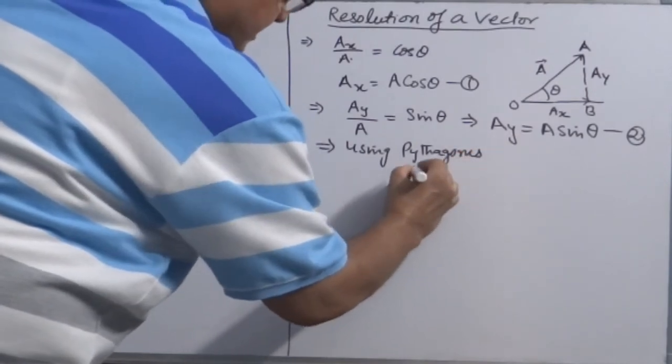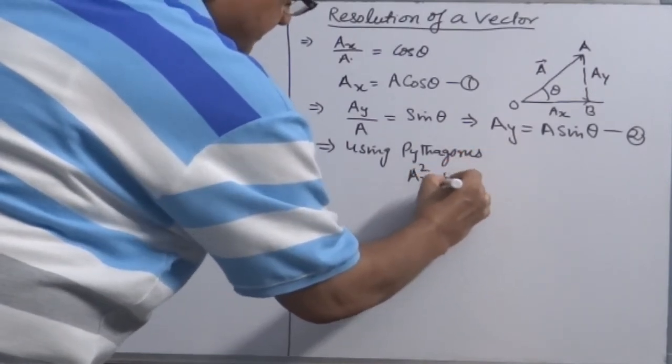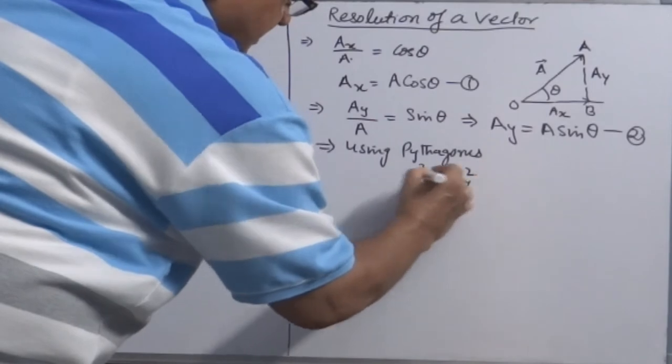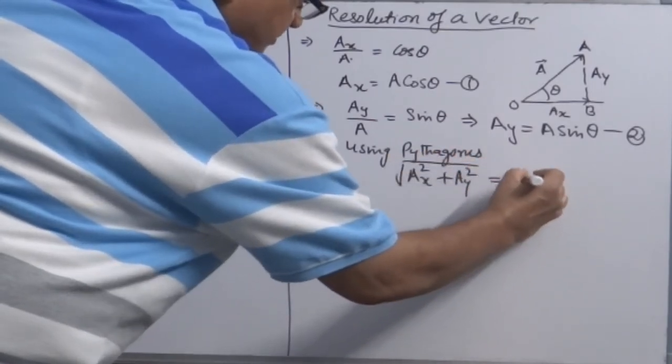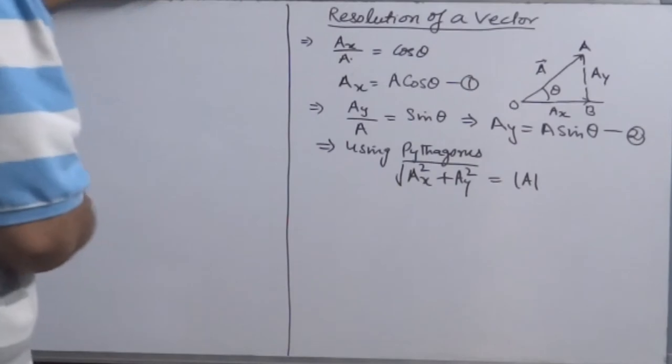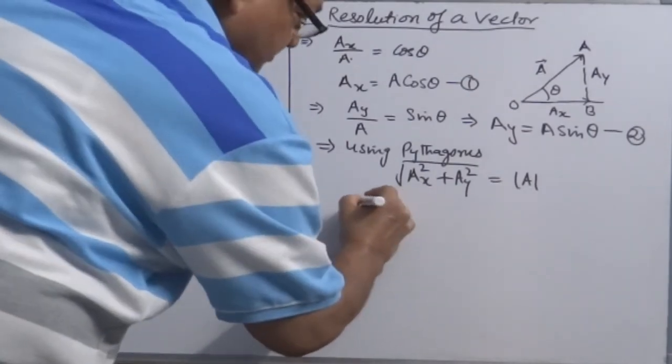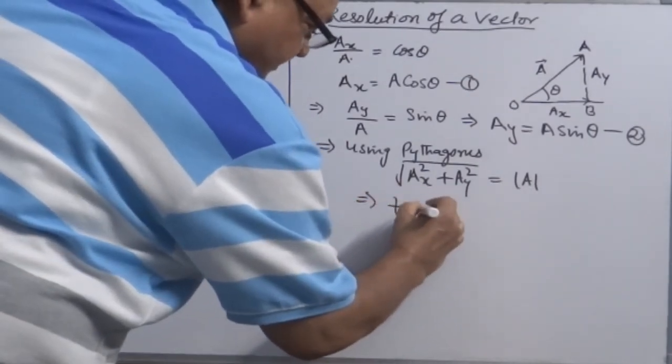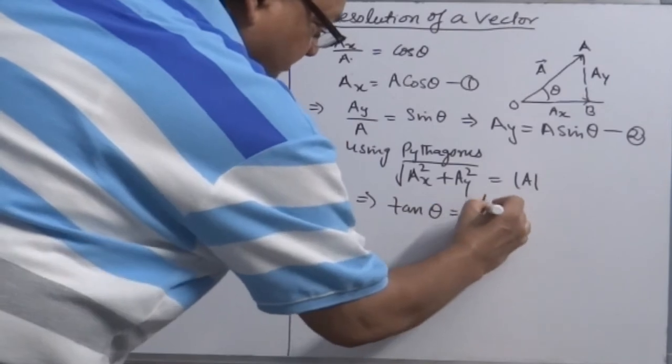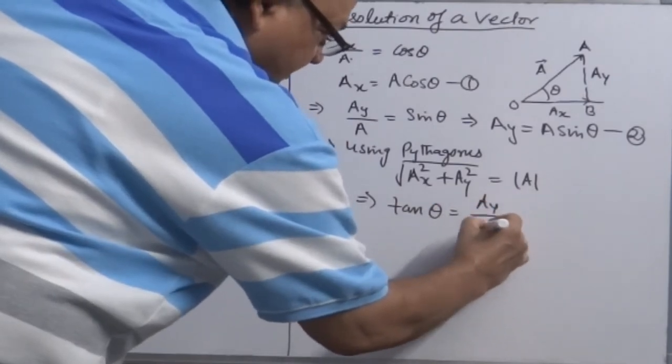Then square root of Ax square plus Ay square will be equal to mod of A. And to find angle, tan theta is equal to Ay over Ax.